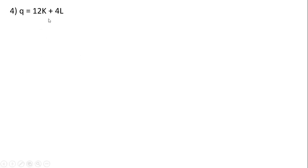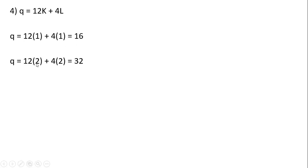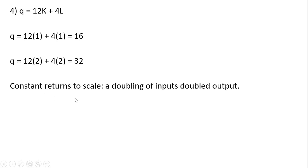Here is a production function — perfect substitutes in this case. Starting with an input mix of K=1 and L=1, this firm produces 16 units of output. If we double our inputs, output exactly doubles. So in this case, we get constant returns to scale — a doubling of inputs doubled output.